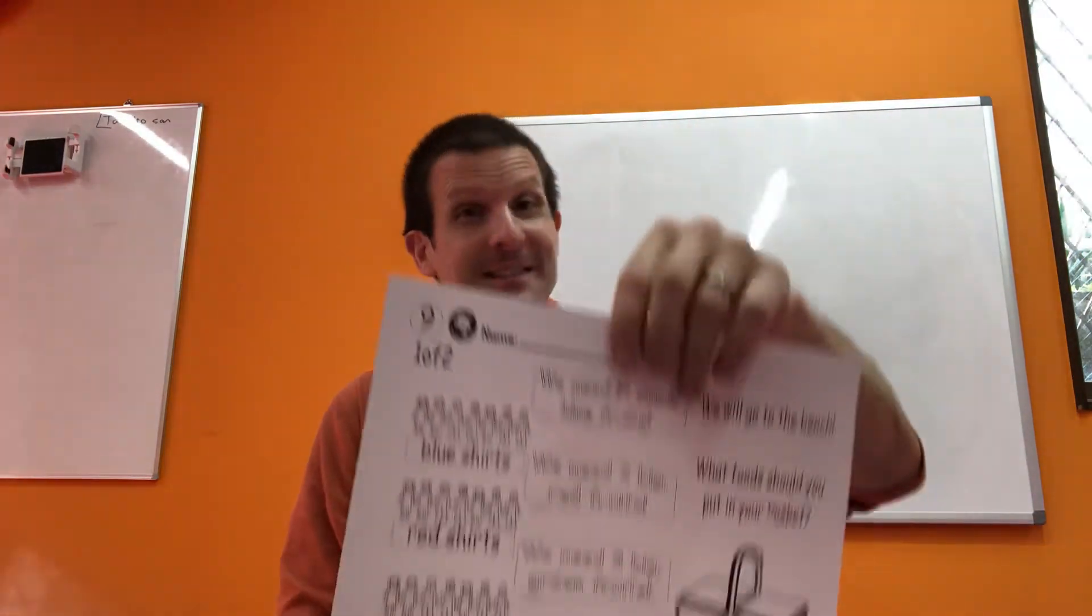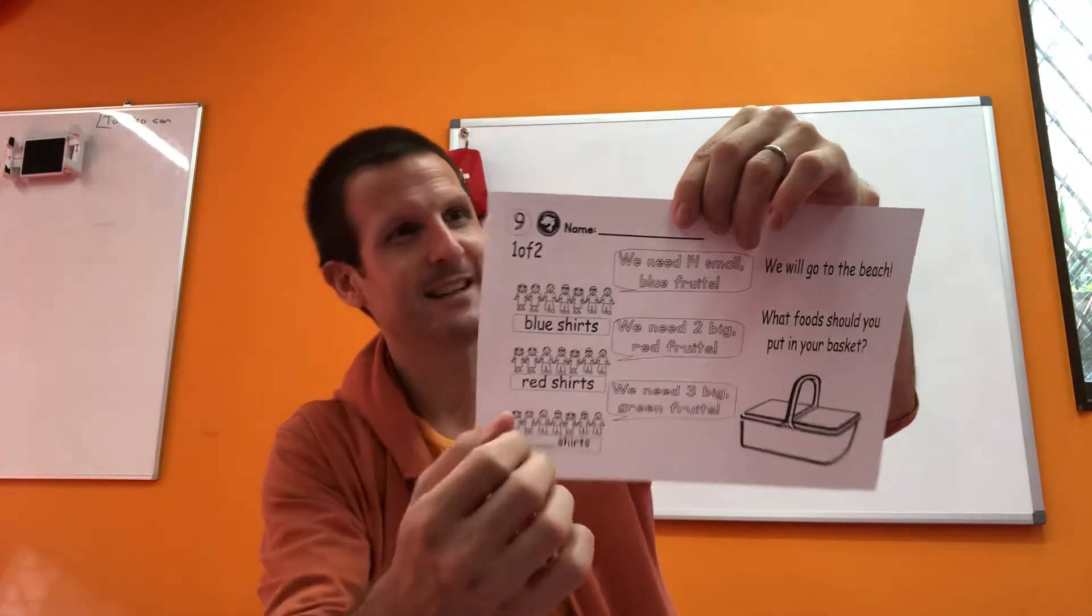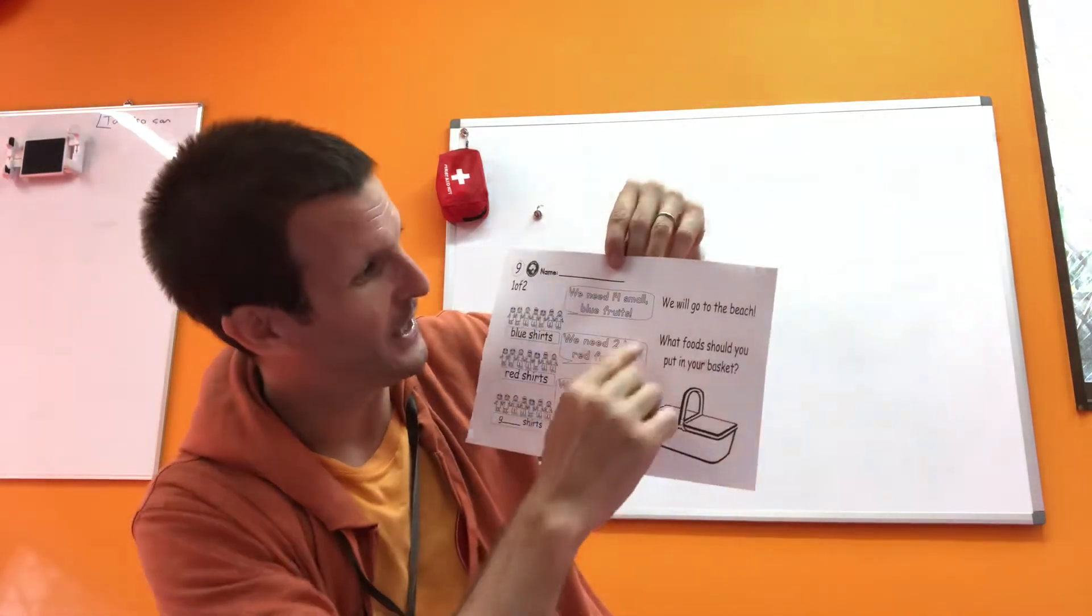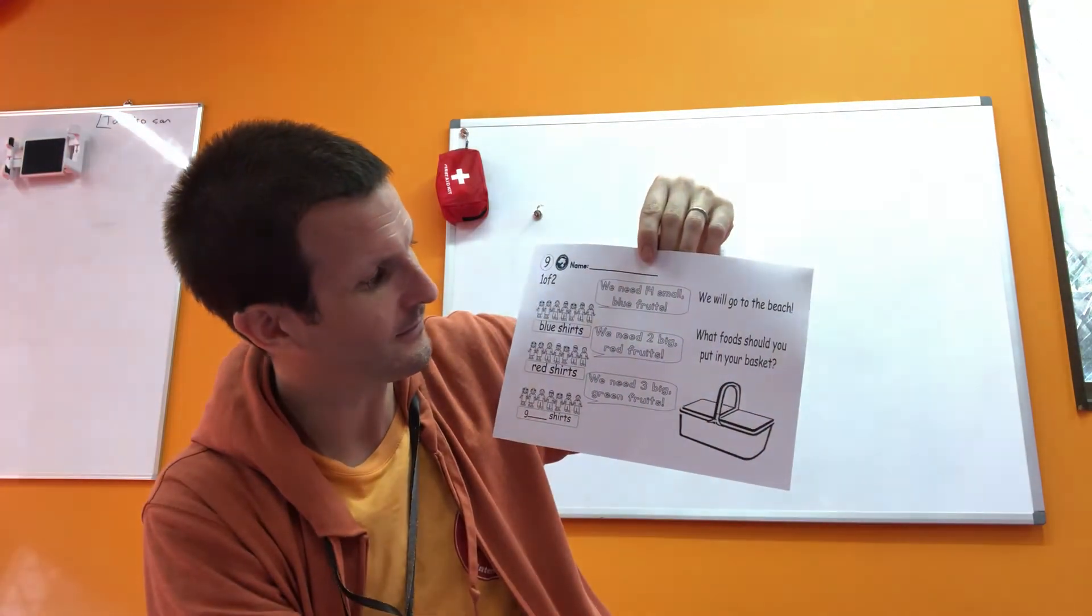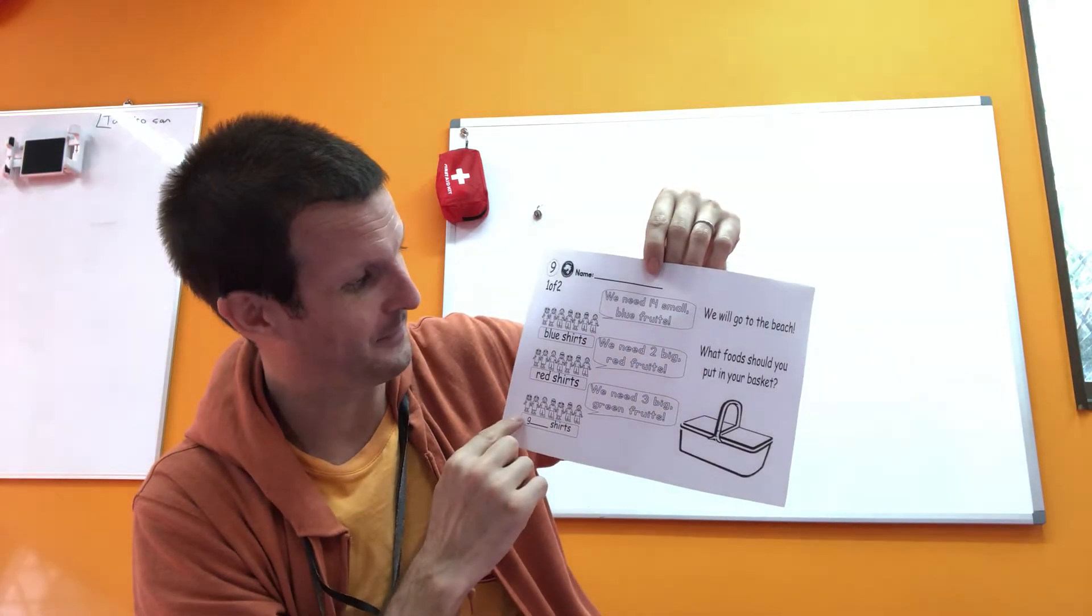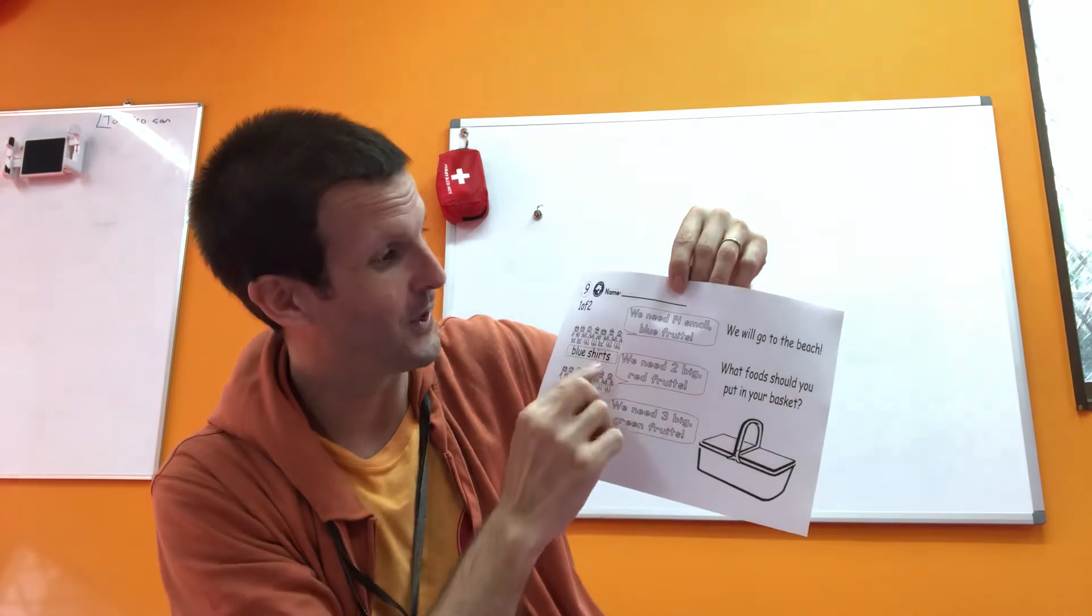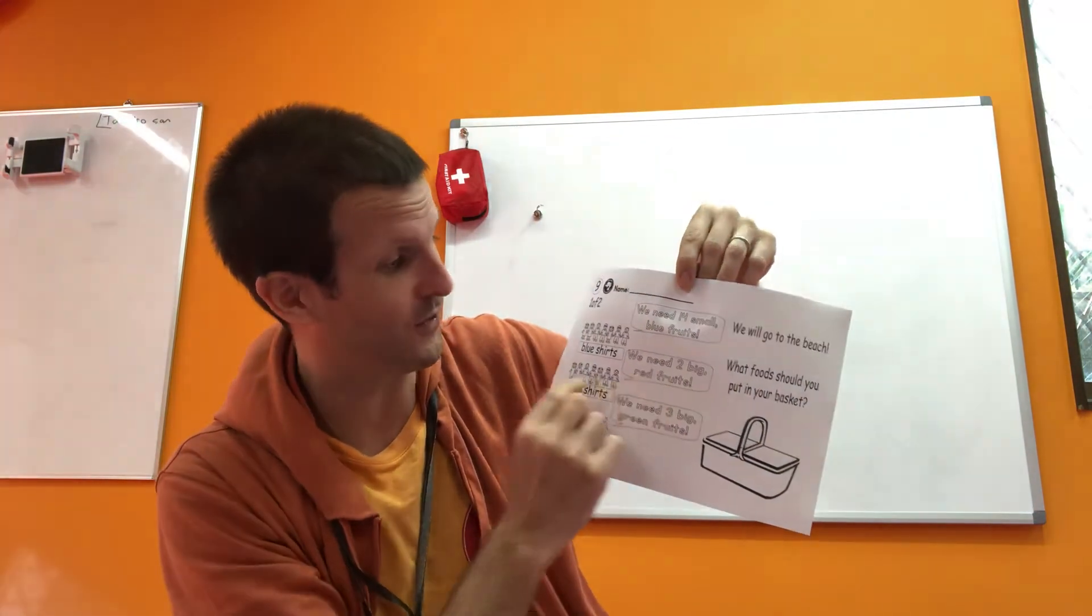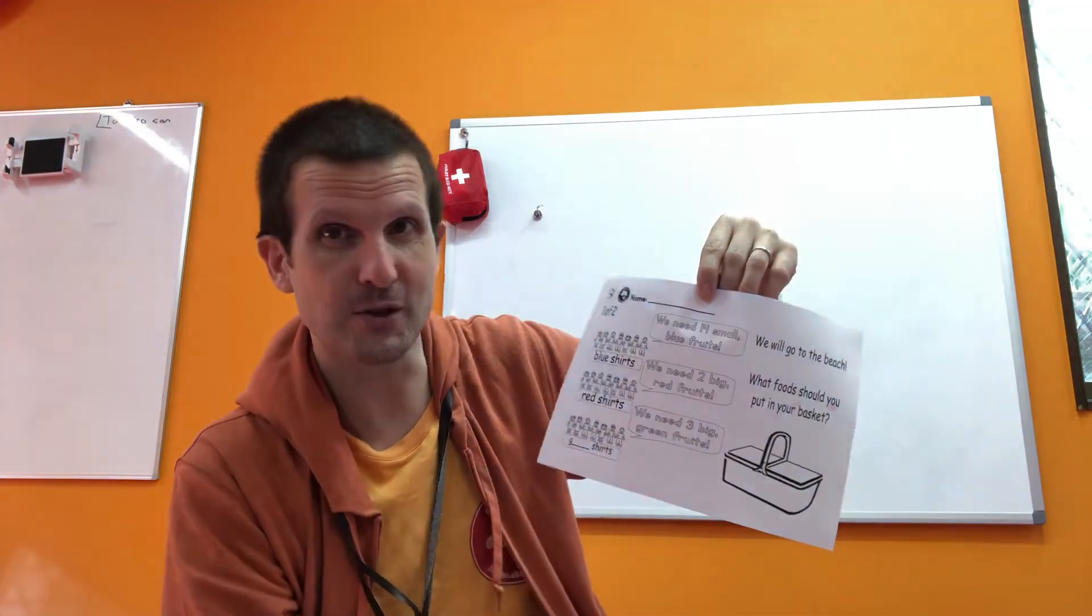Number nine, even harder still. Look at this one. So, this is one of two, of course. So, the question is... Sorry for the fan. We will go to the beach. What food should you put in your basket? Well, here, this is the blue shirts friend, the red shirts friends, and the other color friends. So, they're saying we need 14 small blue fruits. Okay? So, these are the blue shirt friends. We need two big red fruits. These are the red shirt friends. And we need three big green fruits. Green shirts friends. So, that's one of two.